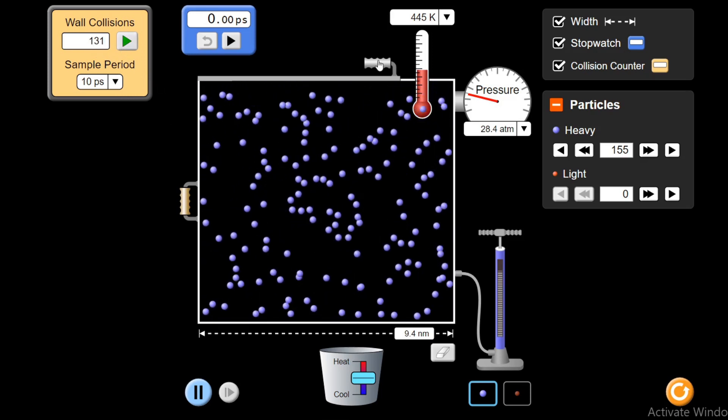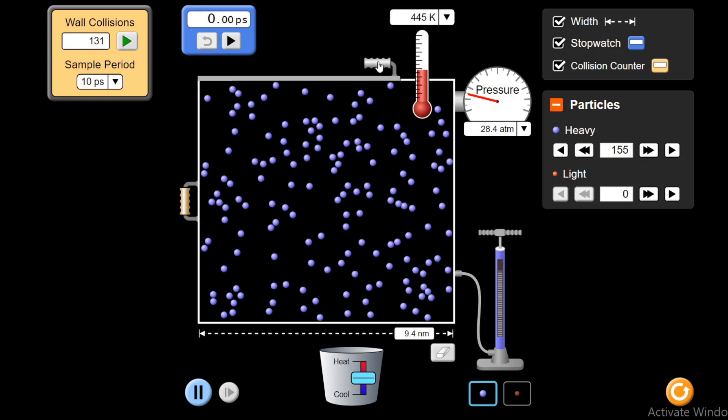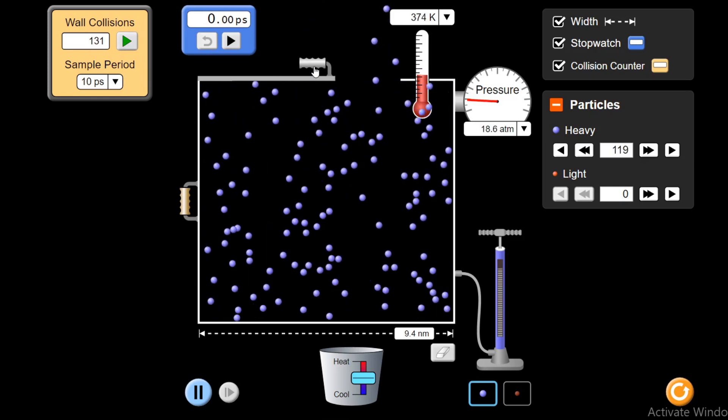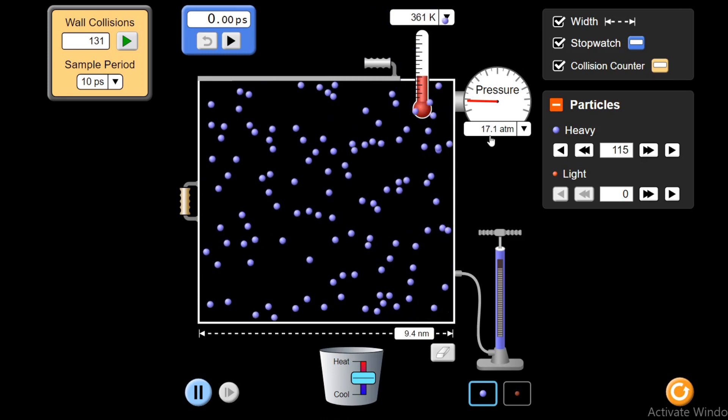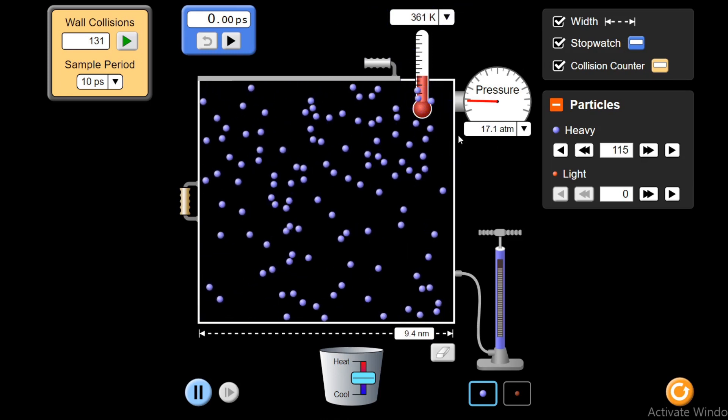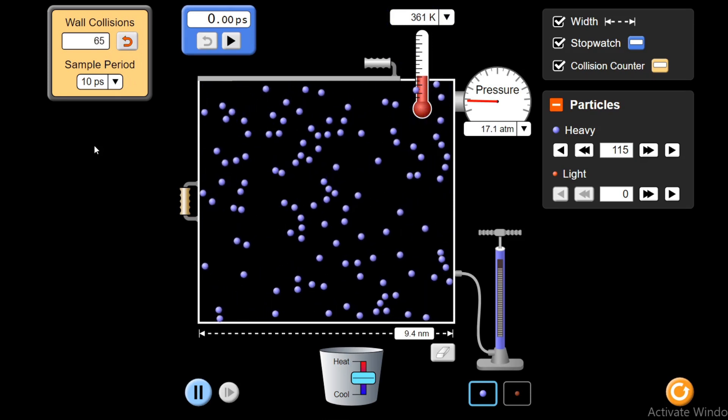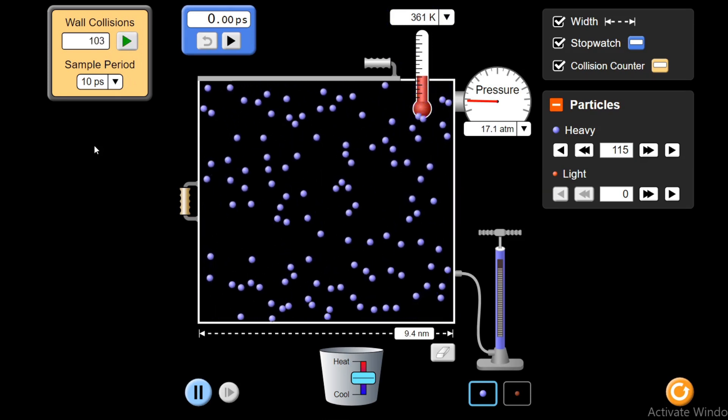And another way was by reducing the number of molecules. I have reduced the number of molecules. Atmospheric pressure has reduced to 17.1 and number of collisions have also decreased to 103.